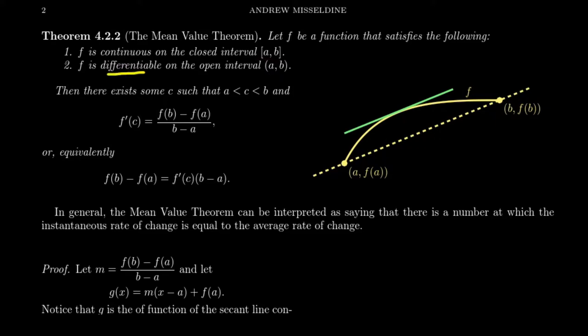Now, if a function is differentiable, that implies continuity — continuity is a weaker condition than differentiability. But we only require differentiability between a and b; we are okay with the weaker assumption of continuity at the endpoints. If these assumptions look familiar, it's probably because we saw in the last video about Rolle's theorem that these sound a lot like the assumptions for Rolle's theorem.